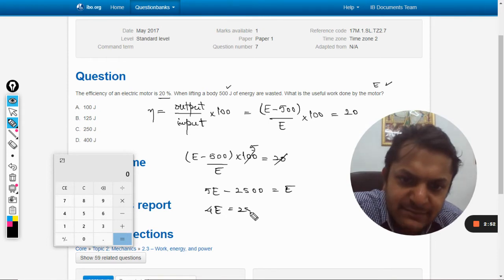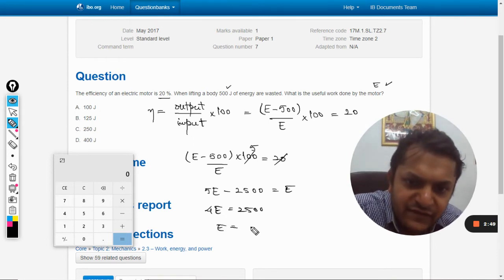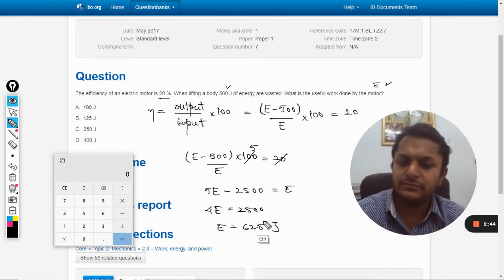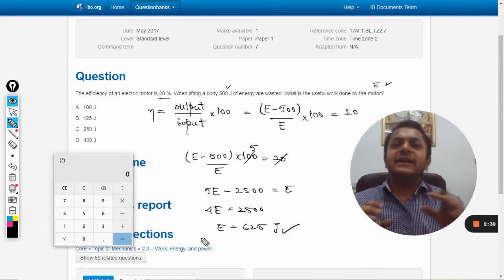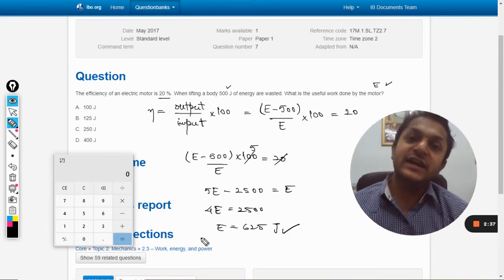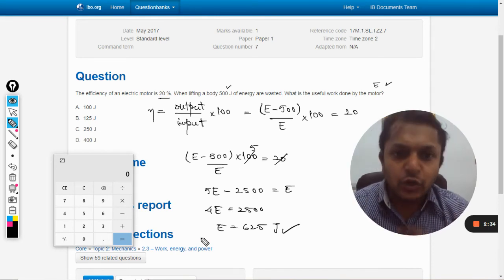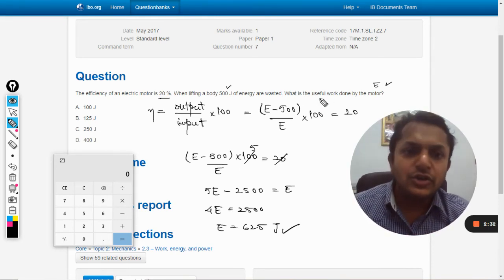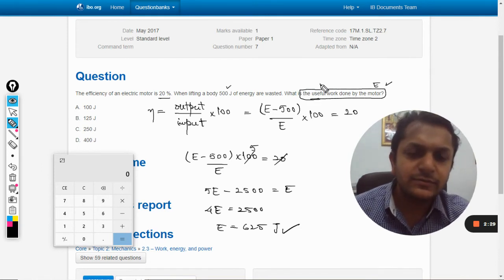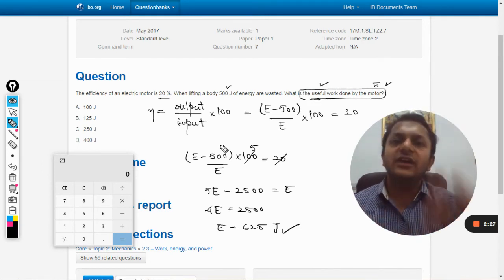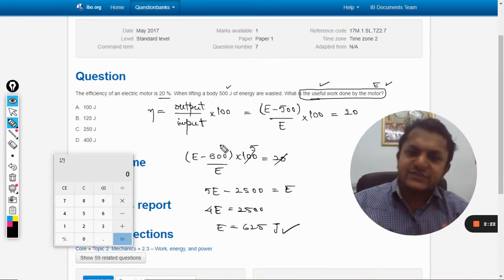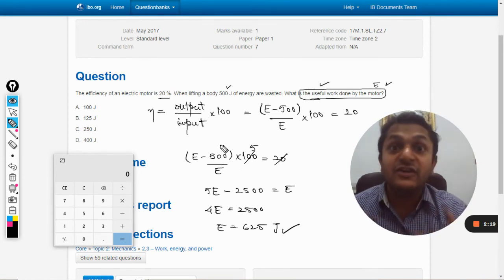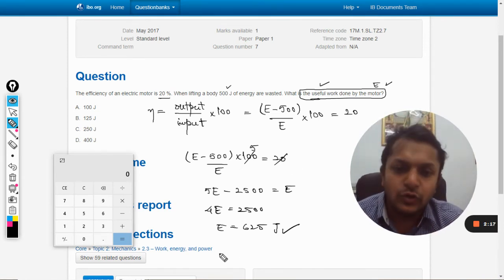By using simple mathematics of algebra, we find this is equal to 625 joules. Now 625 joules is the total energy that has been given to the motor. Now the question is, what is the useful work done by the motor? So actually it is talking about the real output because 625 is the total energy that is given, 500 is wasted out of it.